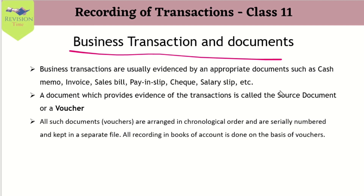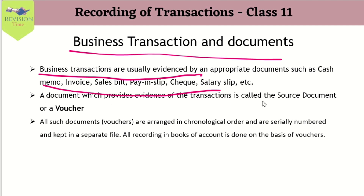When you purchase clothes from a store, they give you a bill with particulars of how many clothes you purchased, the price of each item, the quantity, the date of purchase, and the store name — everything is mentioned on that document. We call it an invoice, bill, or pay slip. Business transactions are usually evidenced by an appropriate document such as cash memo, invoice, sales bill, pay slip, check, salary slip, etc. These are our business documents — they are proof that a transaction happened on that particular day.